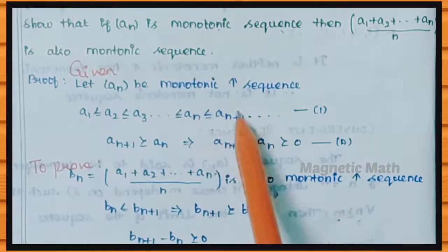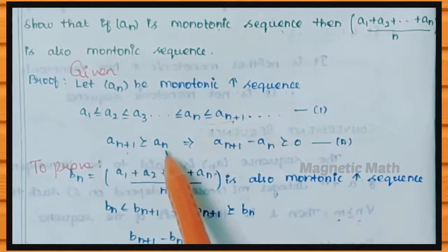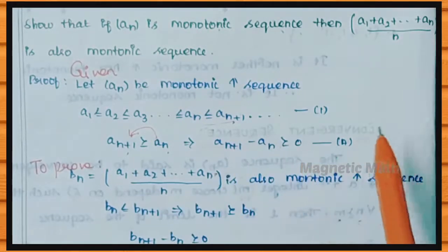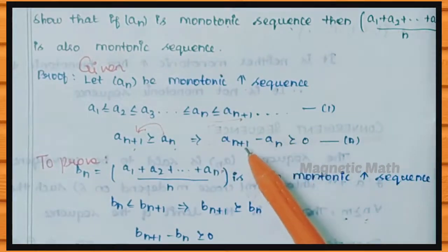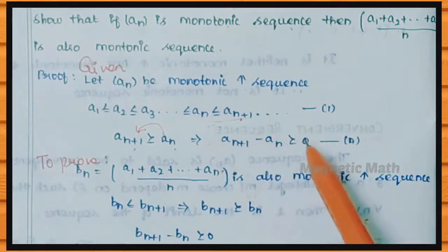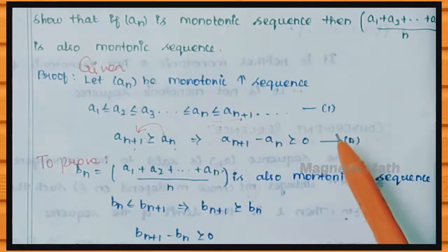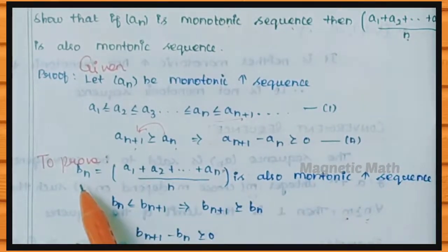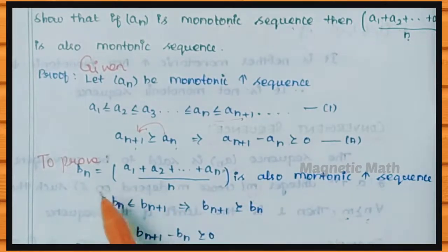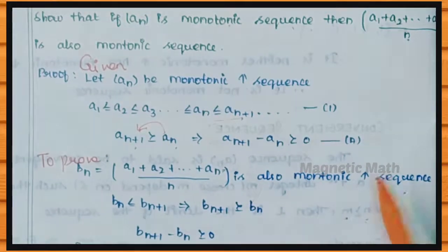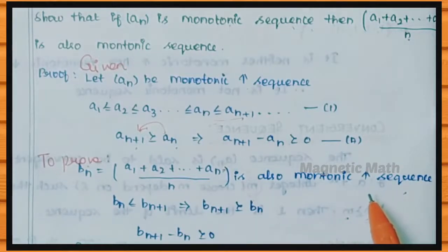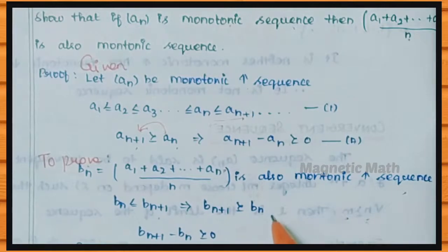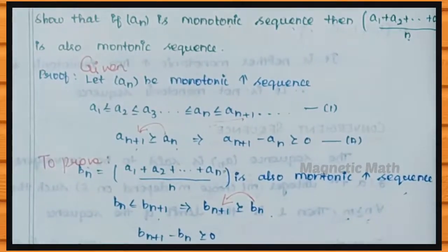To prove bn is increasing, we need to show bn plus 1 minus bn ≥ 0. Let LHS equal bn plus 1 minus bn. We compute bn plus 1 and bn using the formula: bn = (A1 + A2 + ... + An)/n. After cross-multiplying and splitting, we get terms involving n and n plus 1 in the denominator.